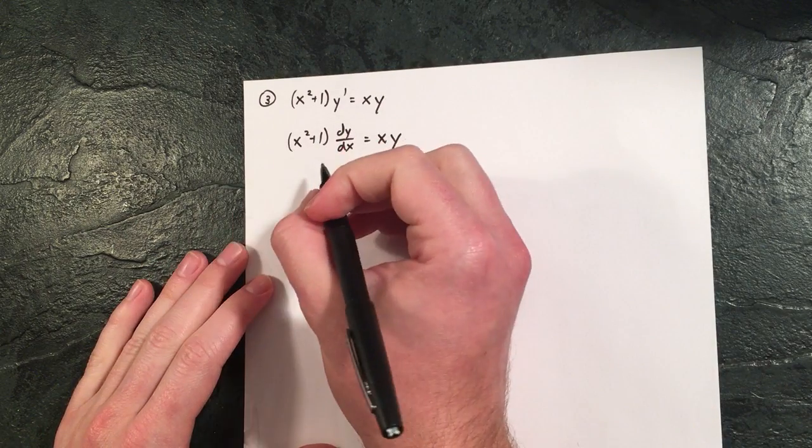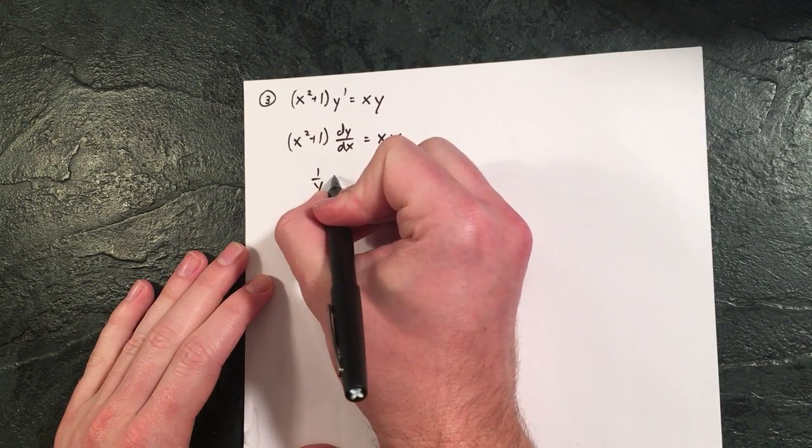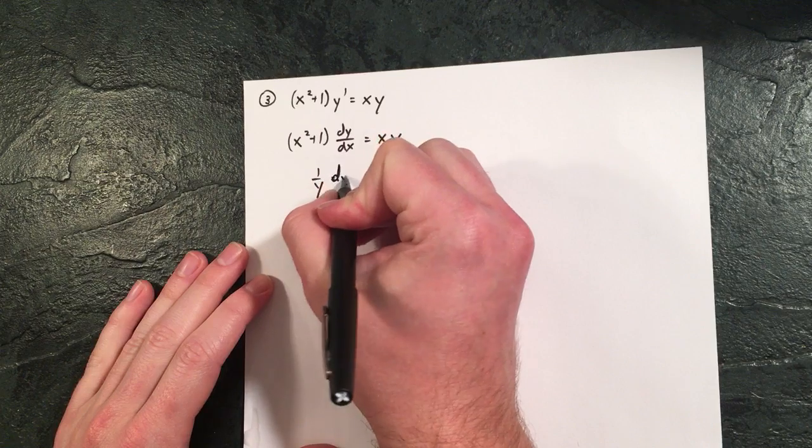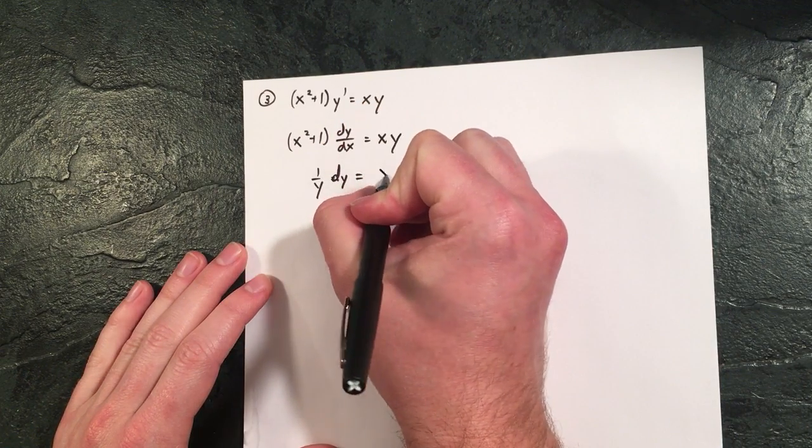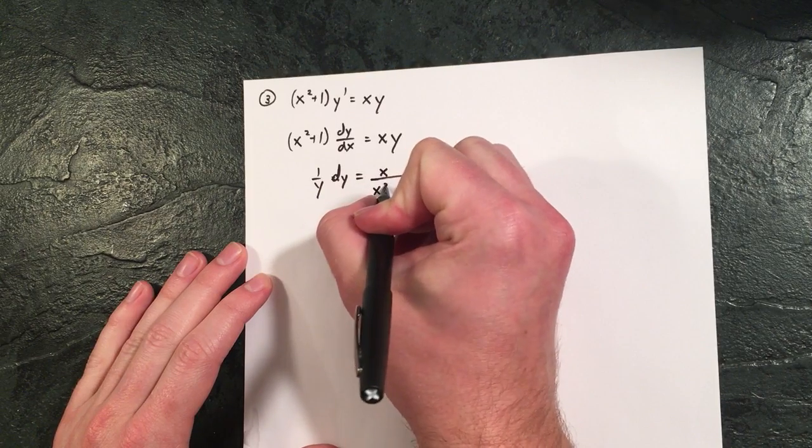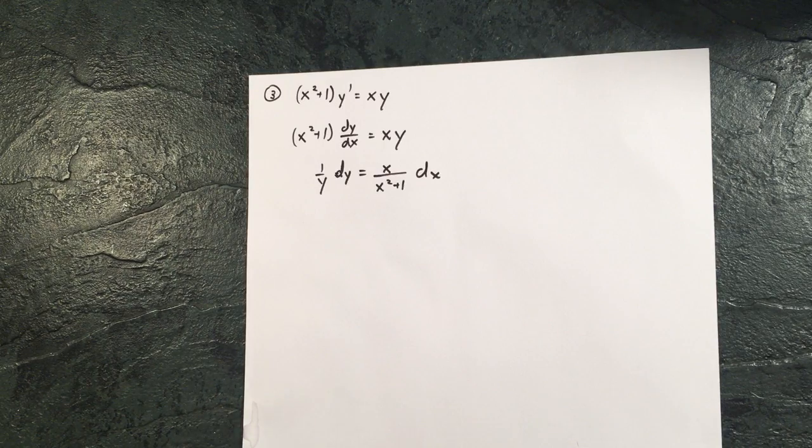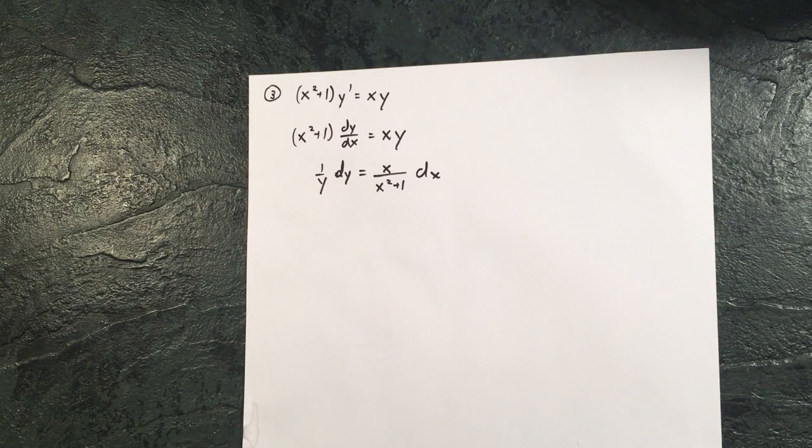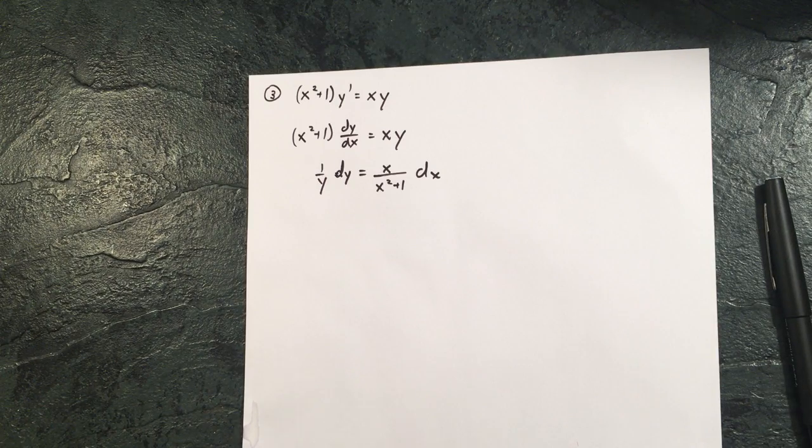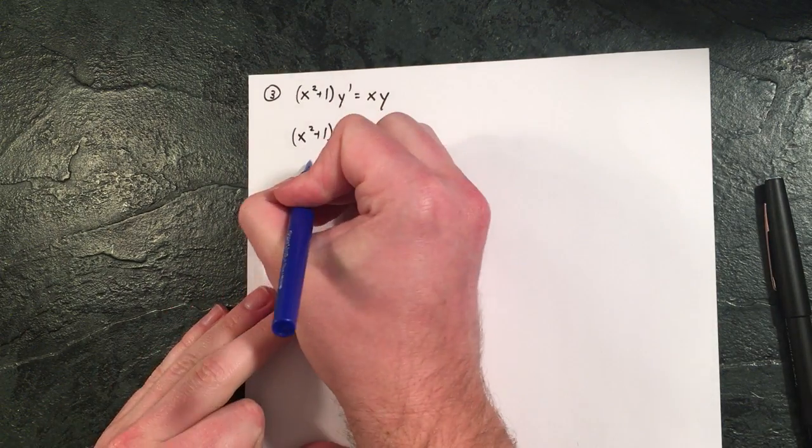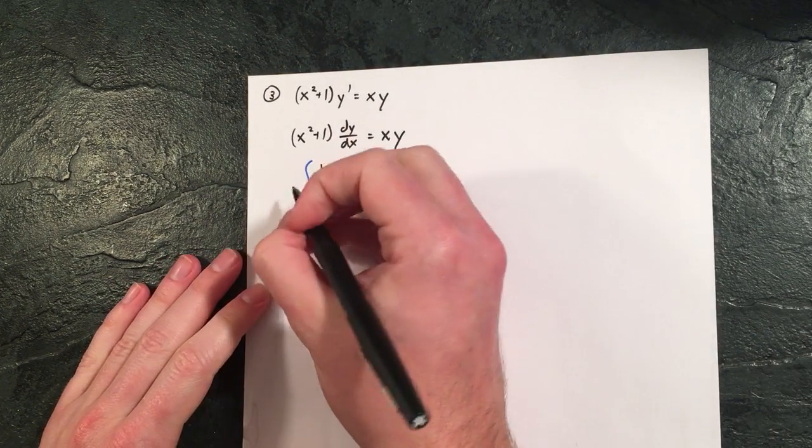And if we're moving our variables accordingly, we would divide that y over, there's a dy there, equals and then we divide the x squared plus one and multiply by the dx. So we're left with one over y dy equals x over x squared plus one dx.